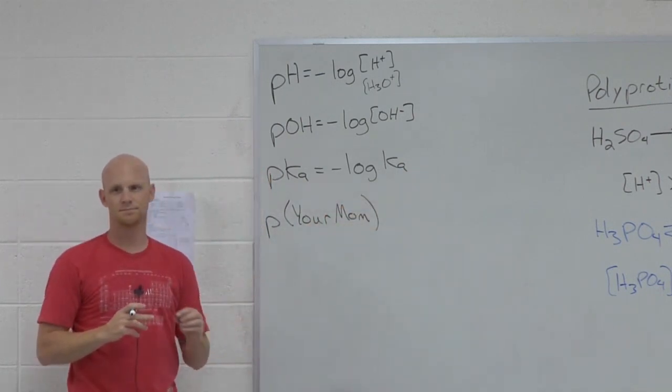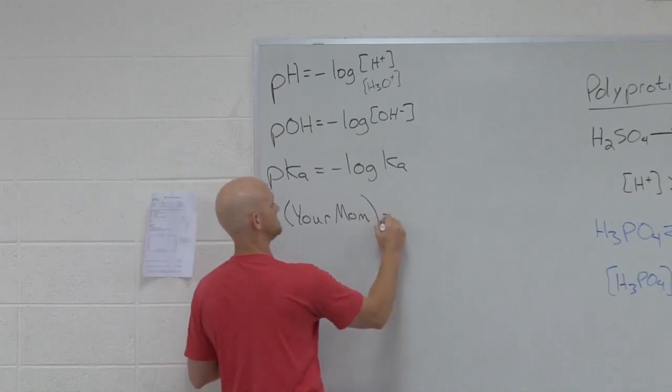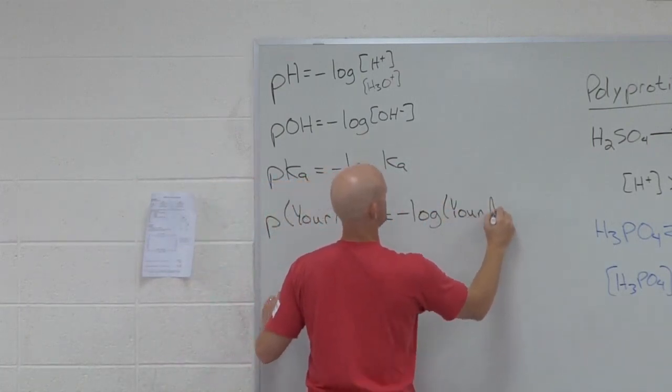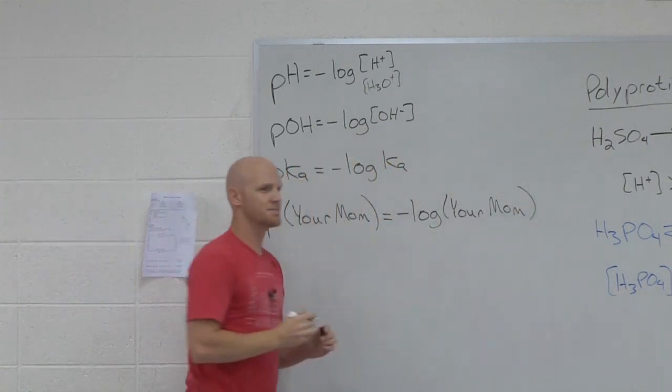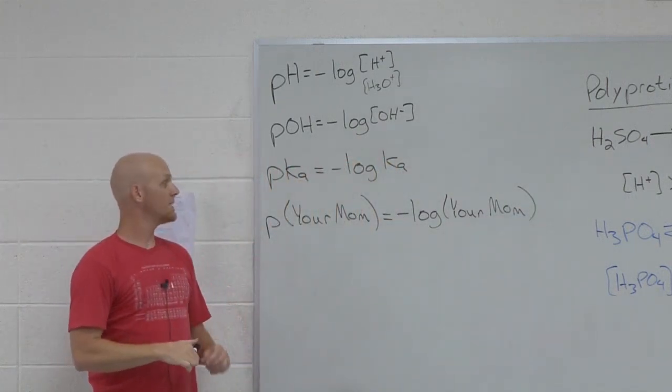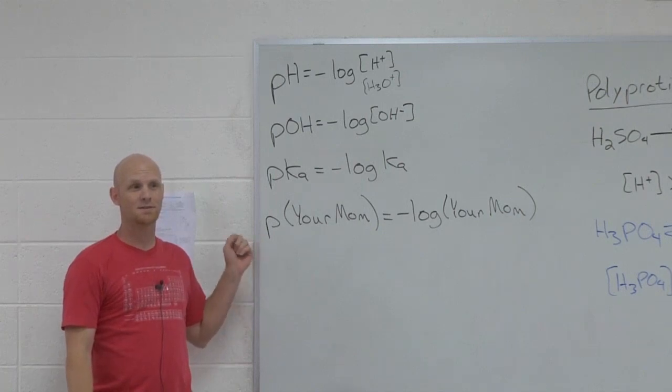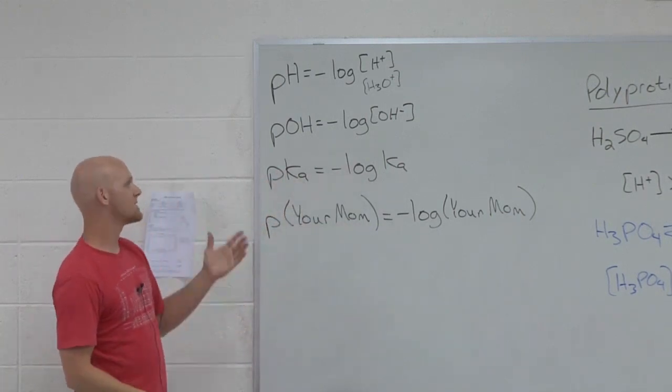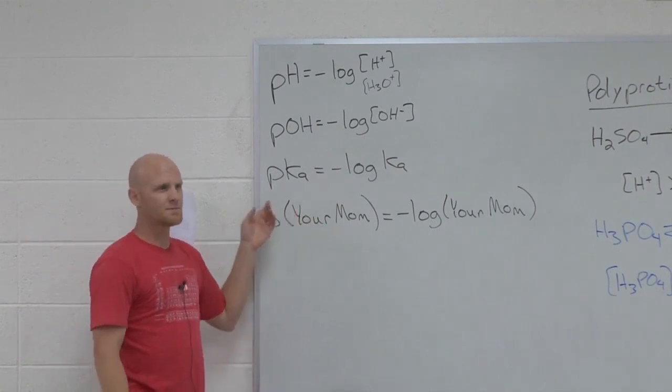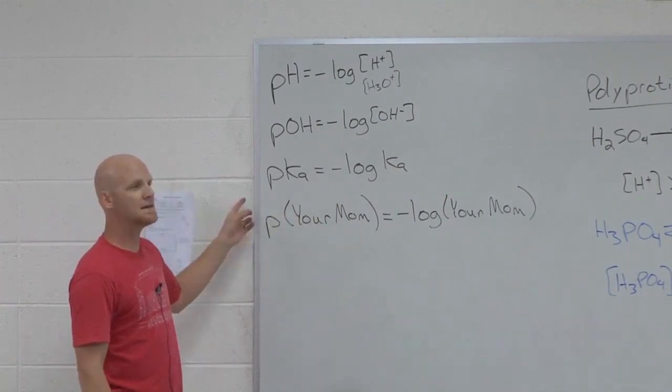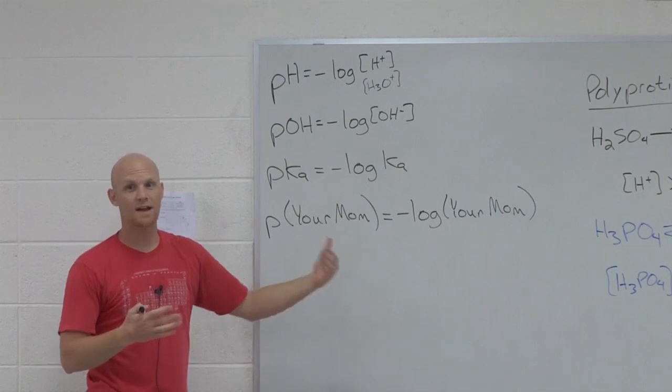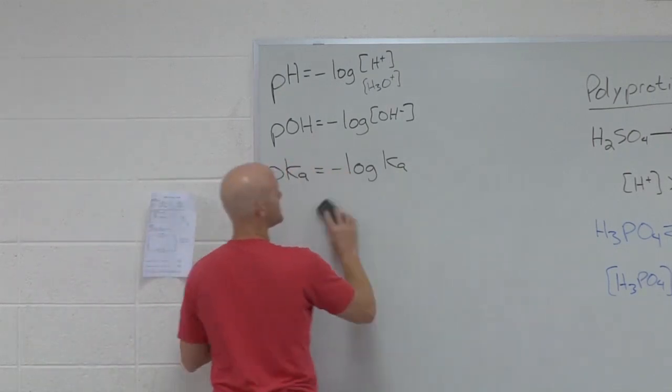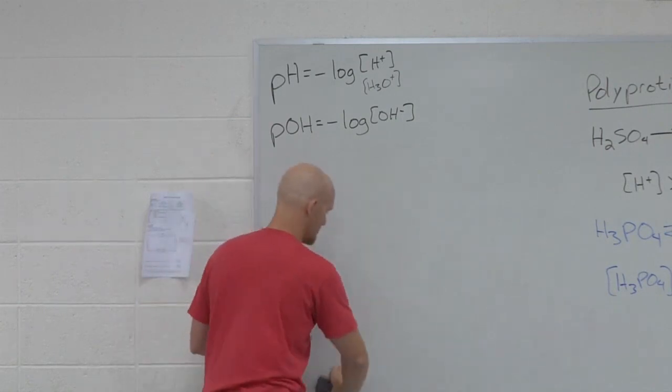What's p your mom? Negative log of your mom. Awesome. Sweet. Point being here is that p is a mathematical term and it means negative log. It's negative log of whatever follows. In this case obviously I'm getting a little bit absurd here, but hopefully point's taken home is p anything is the negative log of whatever that anything is. So we'll use this one later as well, but I wanted to make sure you knew what p meant.